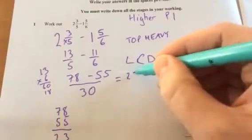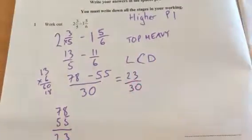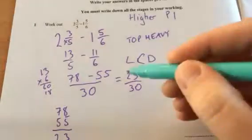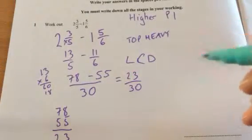And there it is, 23 over 30. I would reduce it if I could, simplify it, but 23 is prime, so that's my final answer.